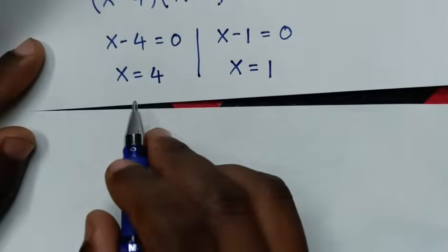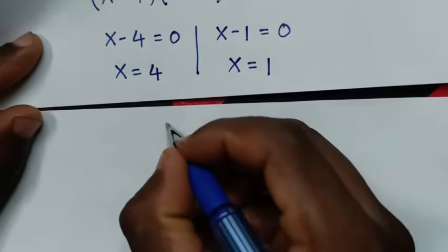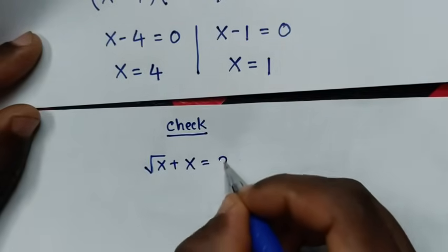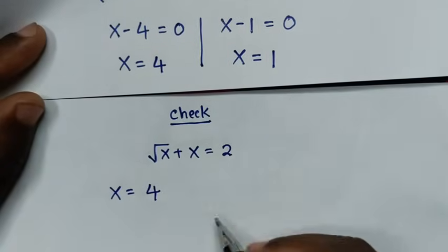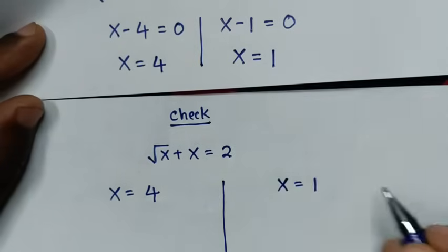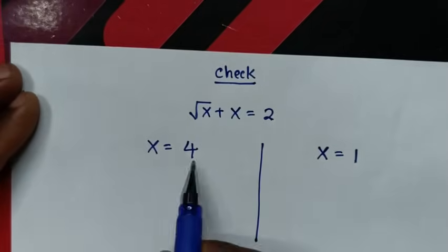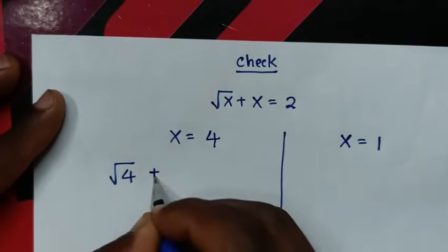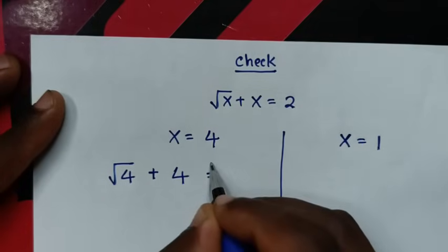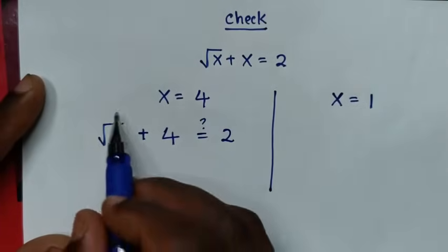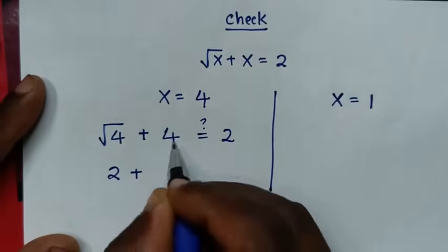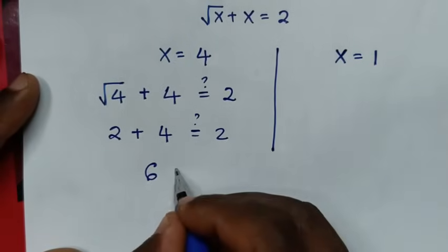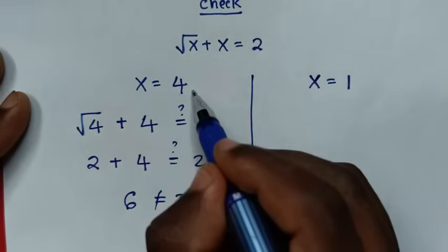Now let's check these answers, x equal to 4 and x equal to 1, to see if they are correct. From our original problem, square root of x plus x equals 2, checking x equal to 4: square root of 4 plus 4 equals 2 plus 4 equals 6, which is not equal to 2. So x equal to 4 is not a correct solution.